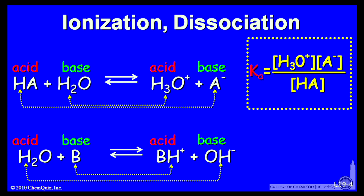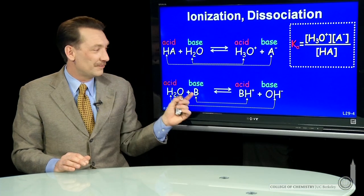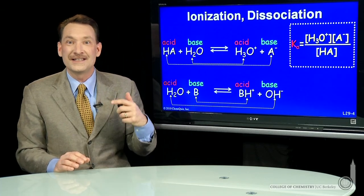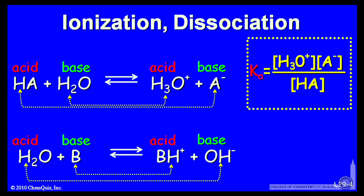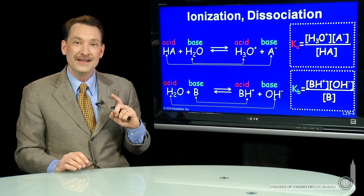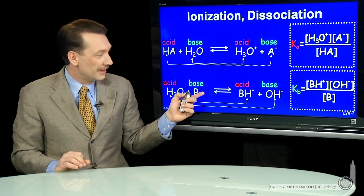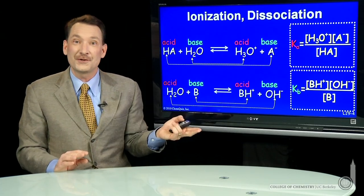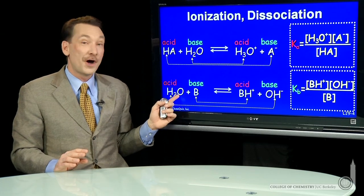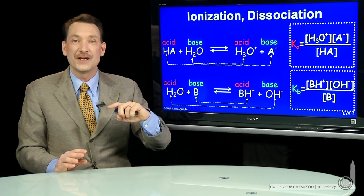The same situation can be looked at for the base. Here's a base reacting with water. When a base reacts with water, it accepts a proton from the water. By accepting a proton, it forms OH minus in water solution. So the presence of OH minus is indicative of a base in water. The Kb is the equilibrium constant for this base dissociation reaction. The products are BH plus and OH minus, over the reactant B. Again, water as a pure liquid doesn't appear in the expression. The size of Kb determines the strength of the base — a large Kb indicates that the base accepts protons from water in a high percentage and makes a high concentration of OH minus in solution.